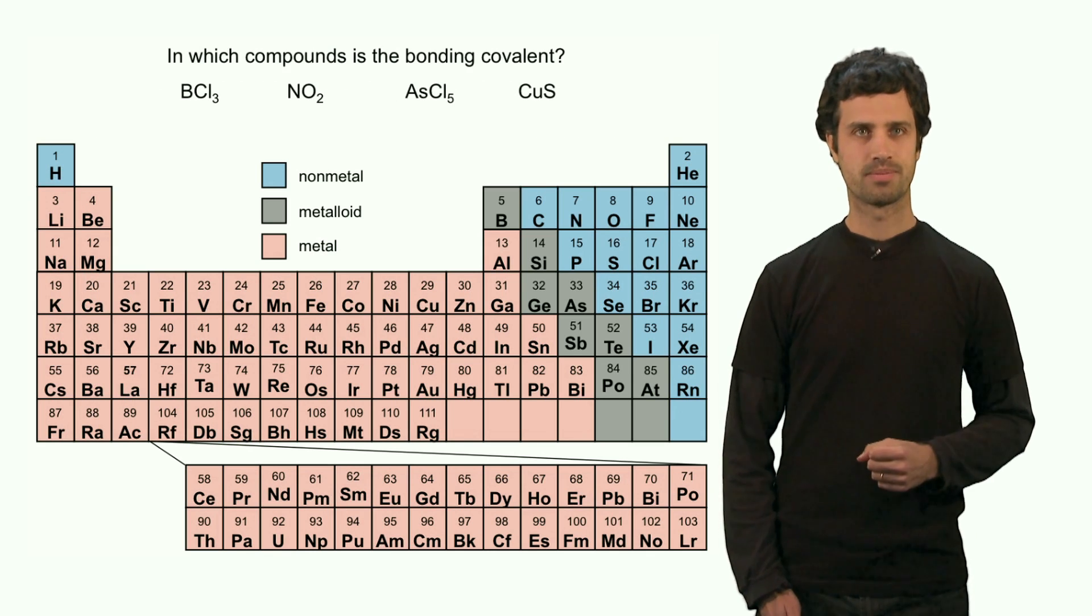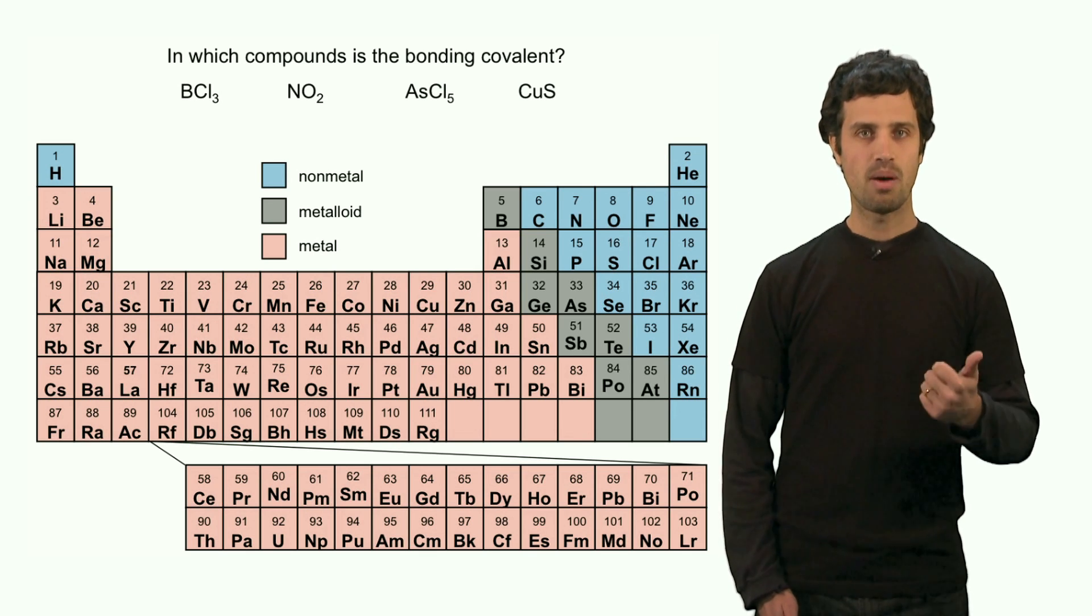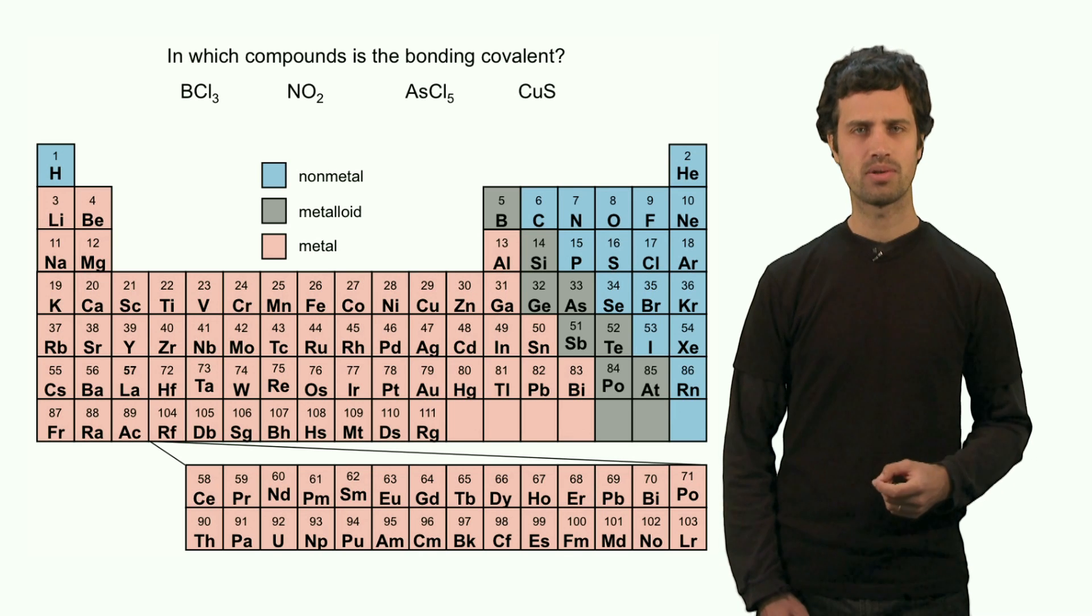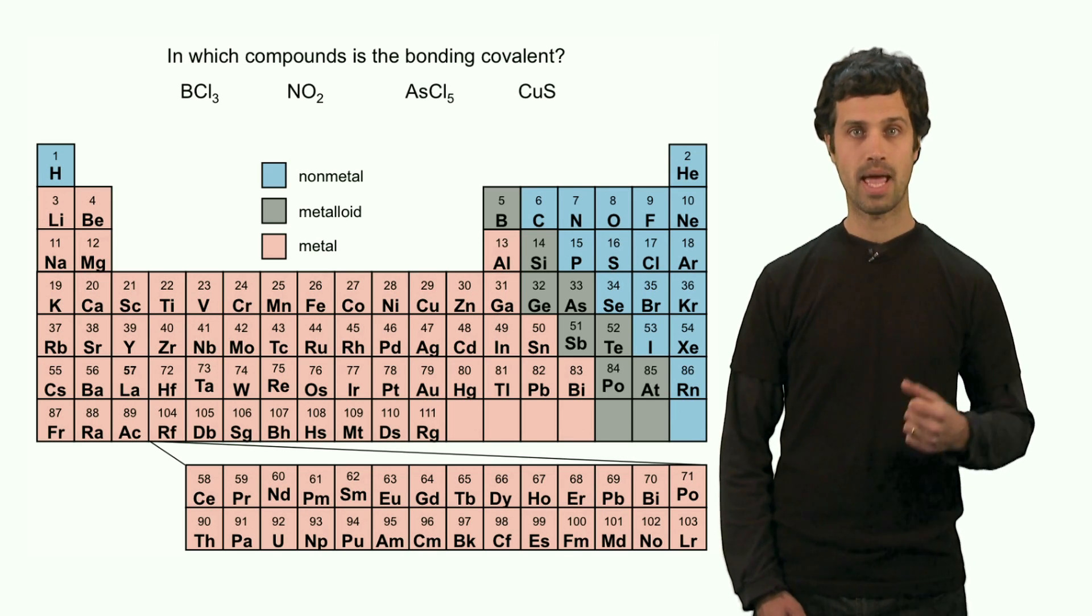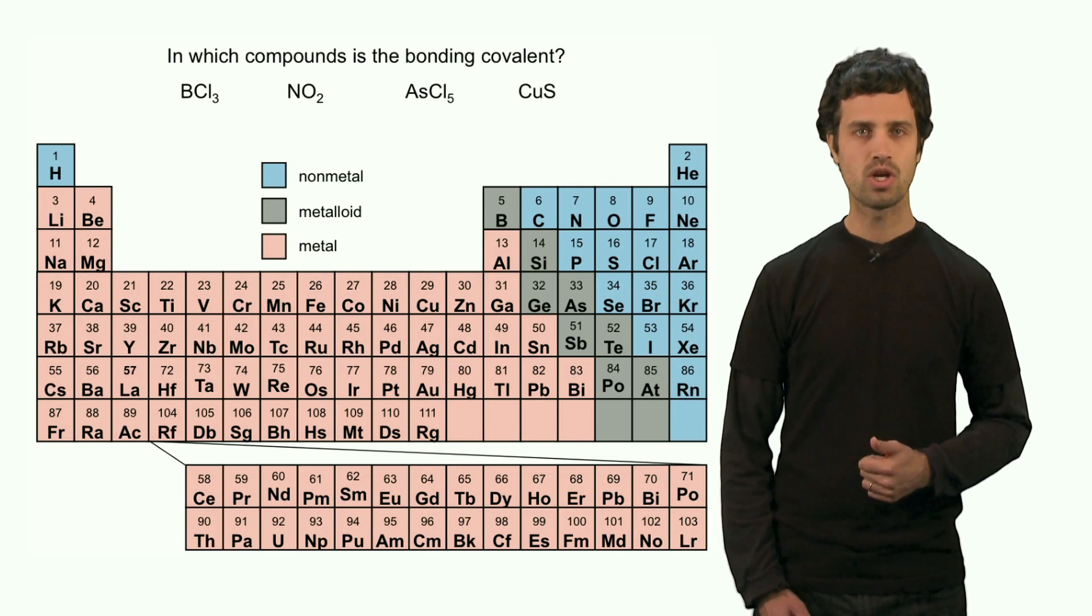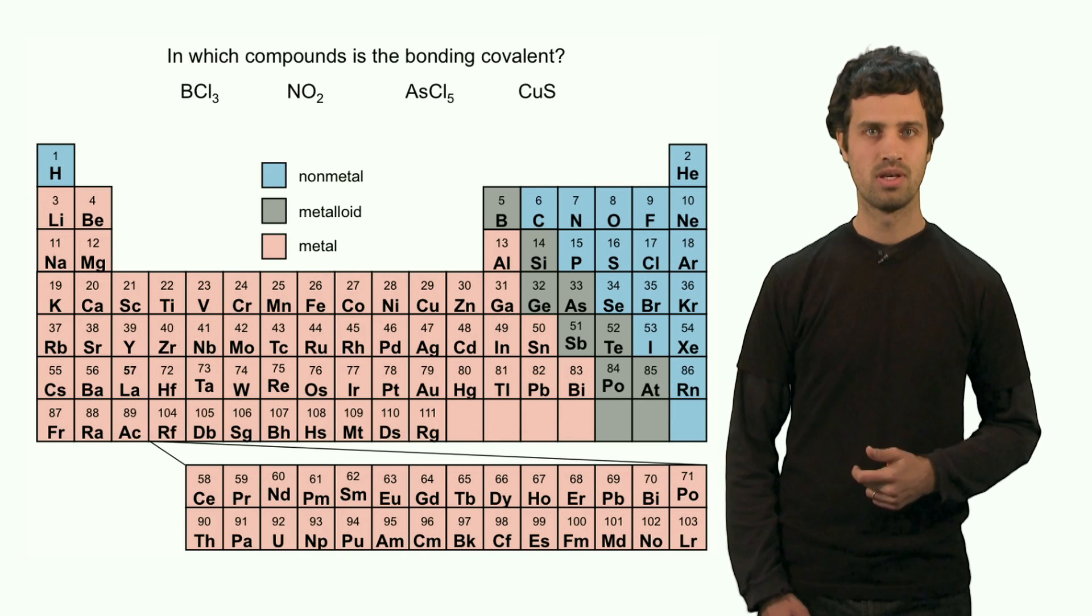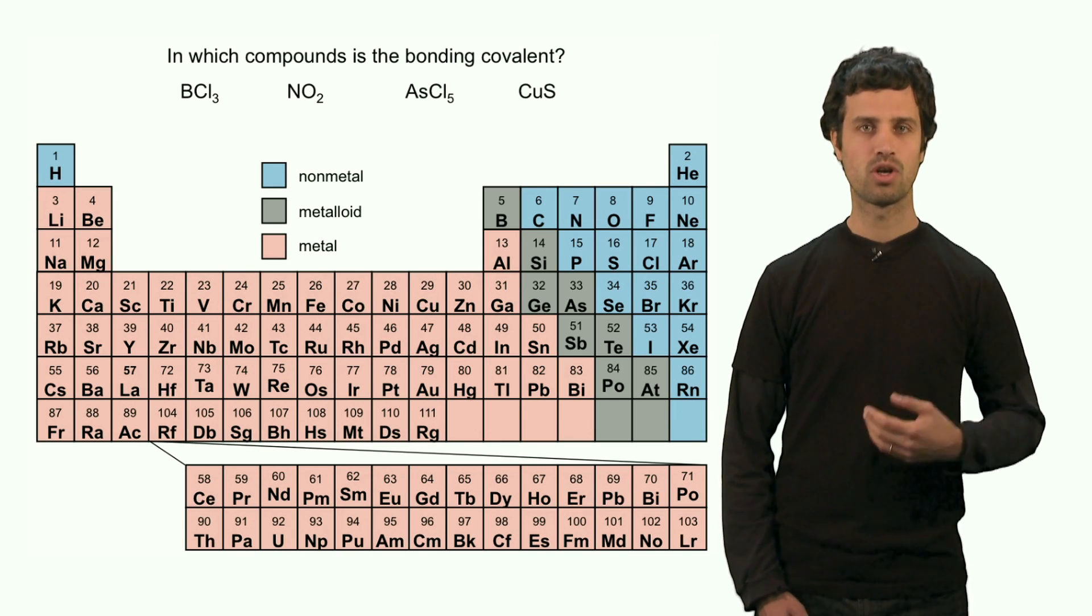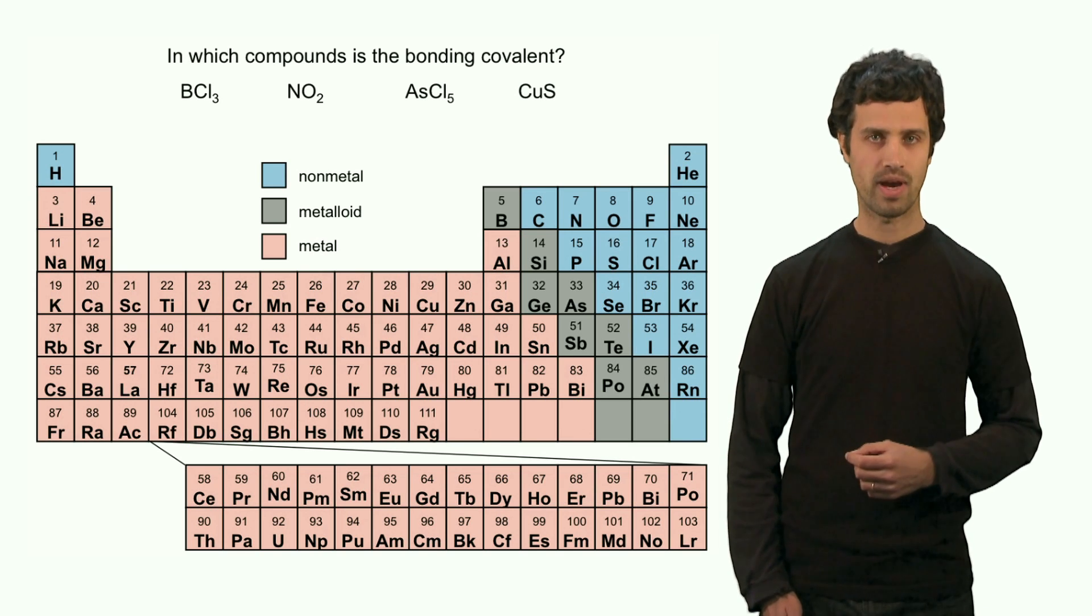Let's look at these elements here. Which of these compounds is a compound that has covalent bonds? The first compound is boron trichloride. It's formed from a boron atom and three chlorine atoms. Both of these atoms are not metals. Boron is a metalloid and chlorine is a nonmetal. That means the linkages in this molecule are covalent.